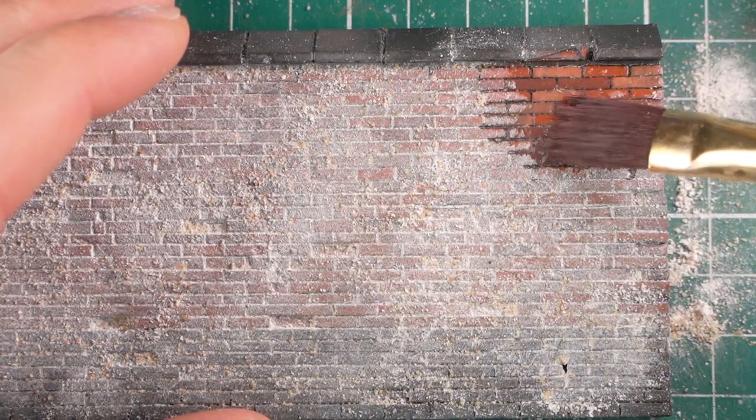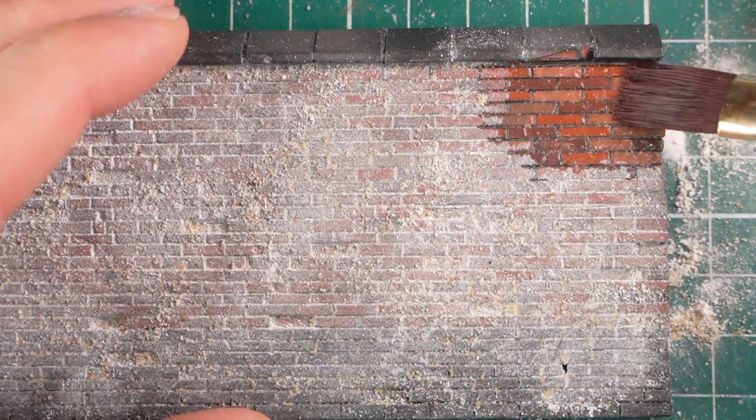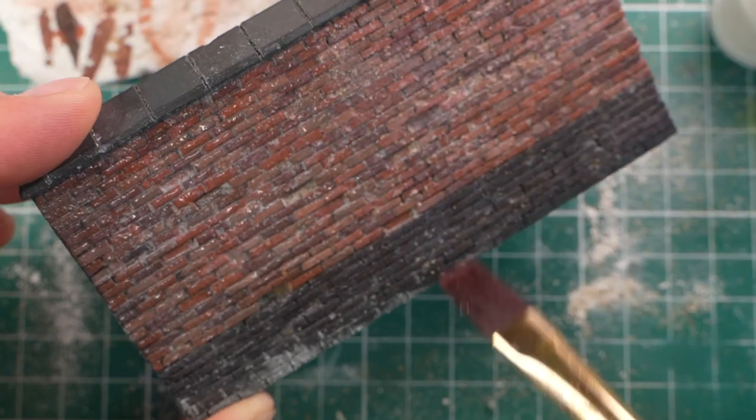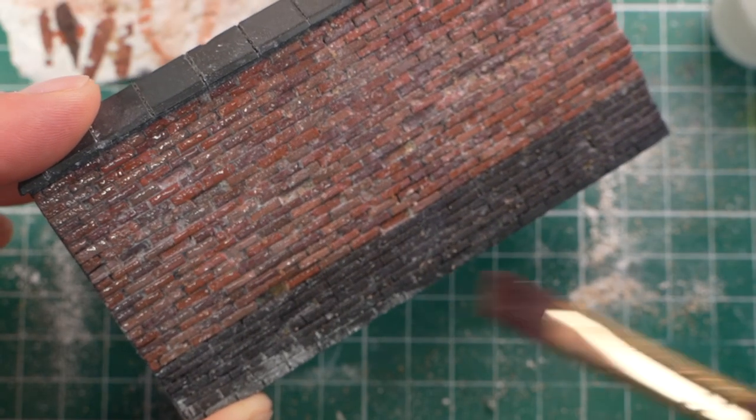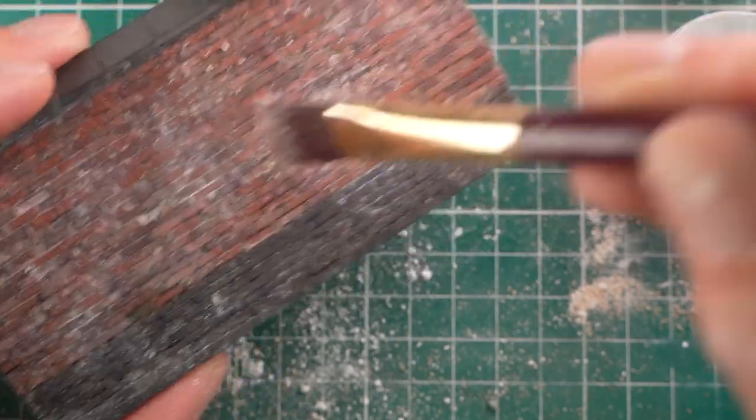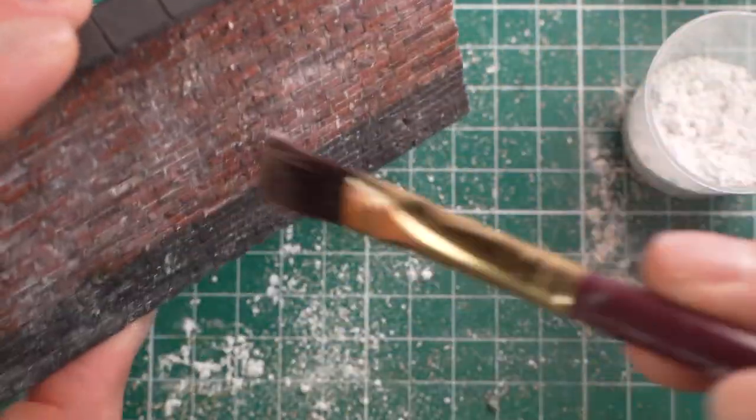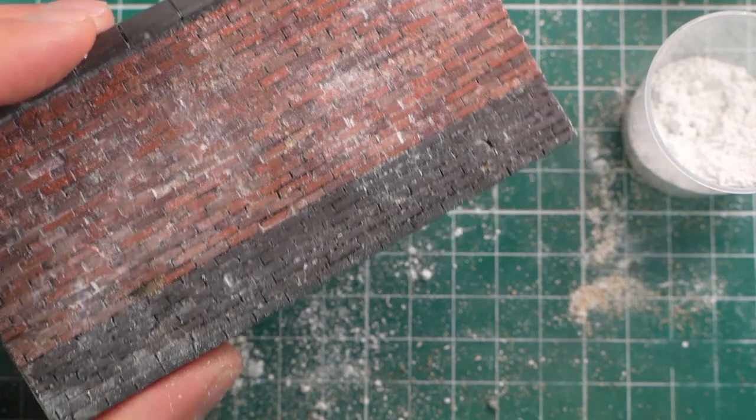When applying the ballast freeze, it first looked alright until it started drying. It turned up all white and I had to repaint most of the wall again.